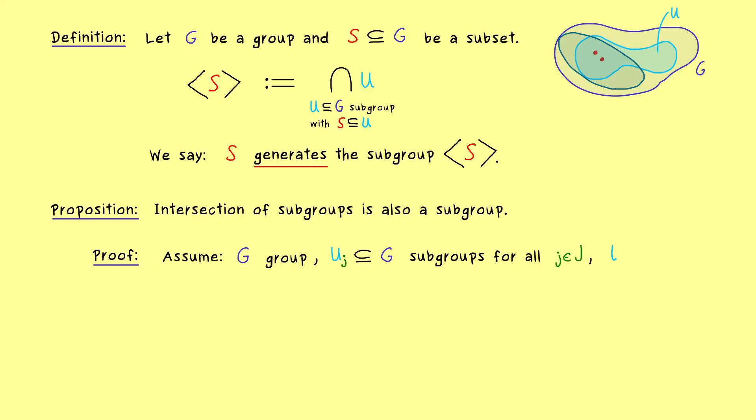And now let's use the name U tilde for the intersections of the subgroups U_J. So this is a well defined set and now we want to show that this is also a subgroup in G. Now the first thing is obvious, we cannot have an empty set, because the identity element E lies in all the subgroups. Therefore it also lies in the intersection, so U tilde is not the empty set.